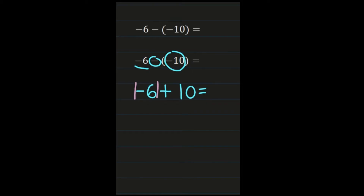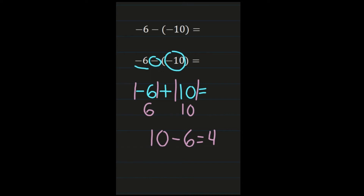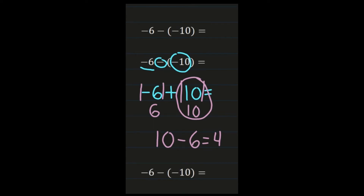Then we have an addition problem. We're adding integers with different signs, so we take the absolute values. The absolute value of negative six is six. The absolute value of ten is ten. When we add integers with different signs, we subtract those absolute values, so ten minus six is four. We go back to the number with the largest absolute value, which is our ten, and since ten was positive, our answer is positive four. So negative six minus a negative ten is positive four.